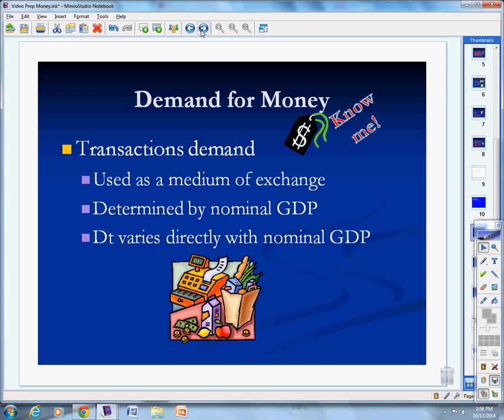Moving on to the demand for money. There's two different types of demands for money: transaction demand and the demand for money as assets. First, transaction demand. What do we primarily use money for? We use it to buy stuff. That's the medium of exchange. How much do we buy? We buy GDP. So the bigger the GDP is, the more money we need.